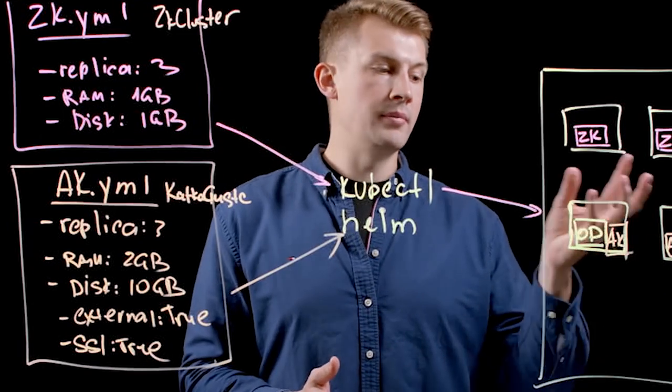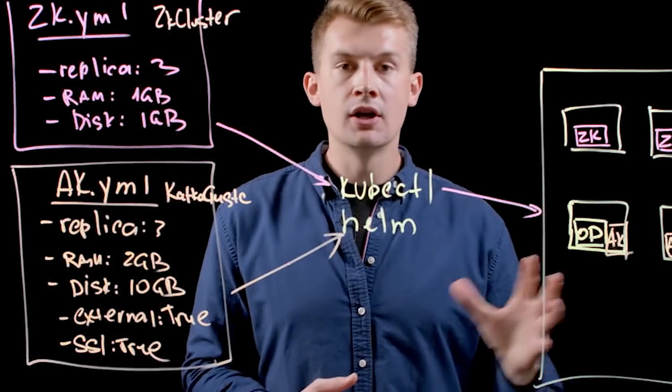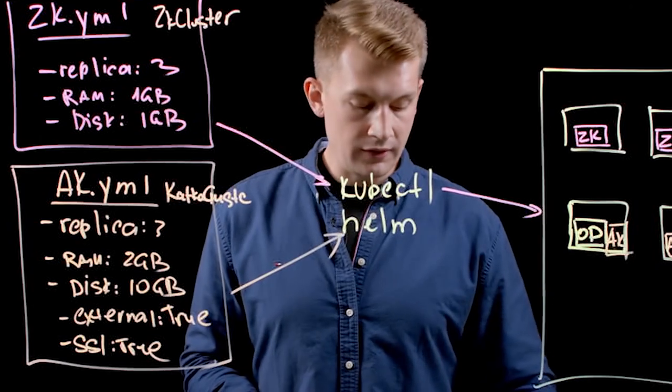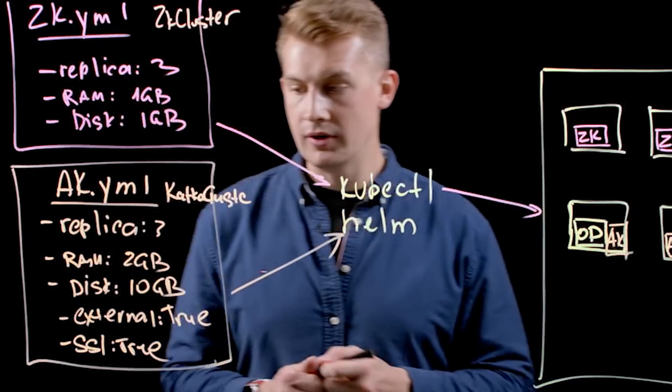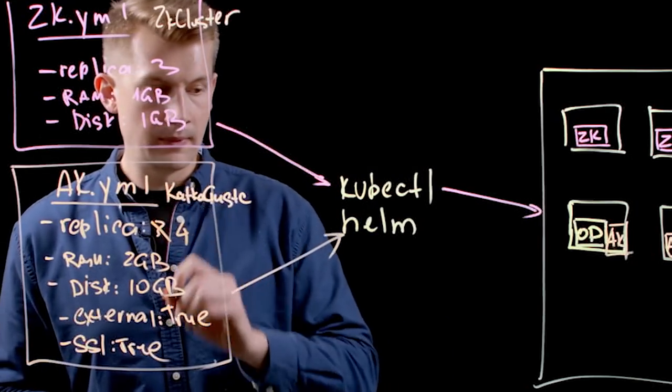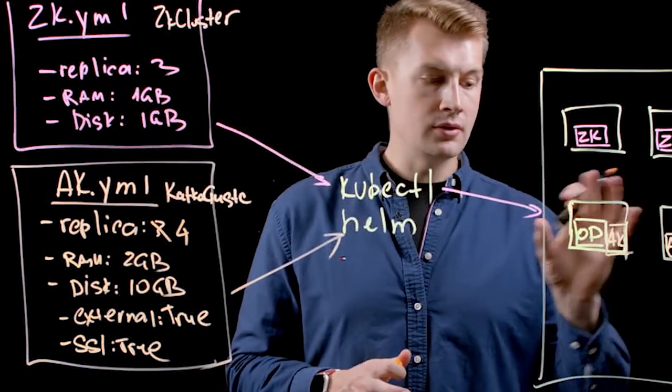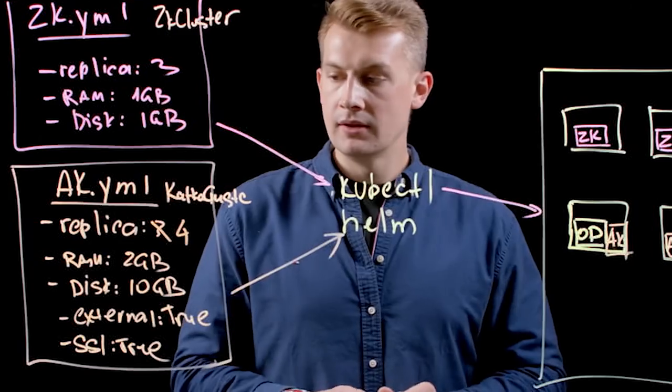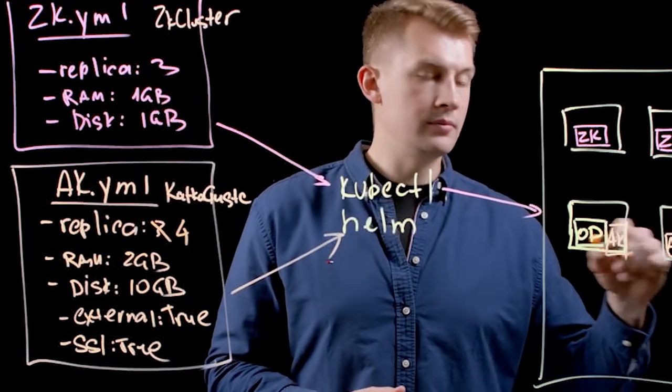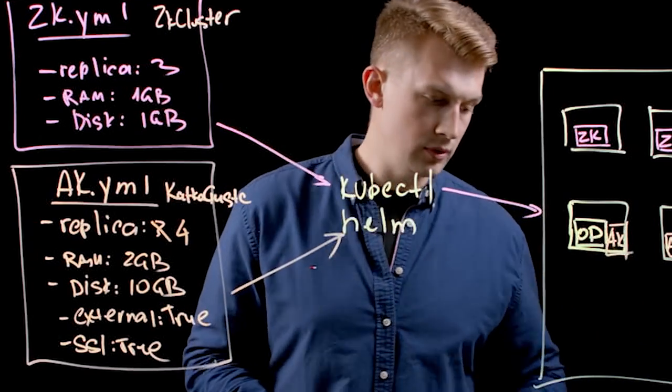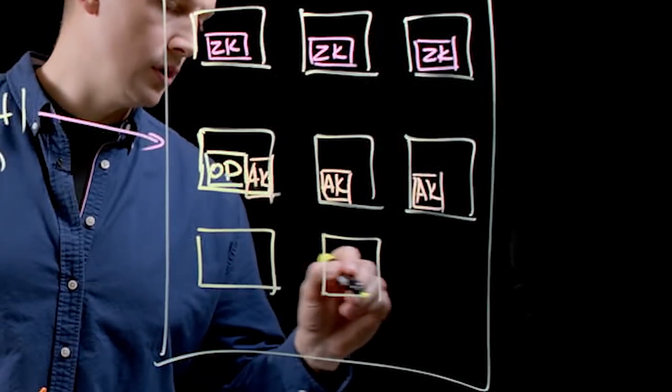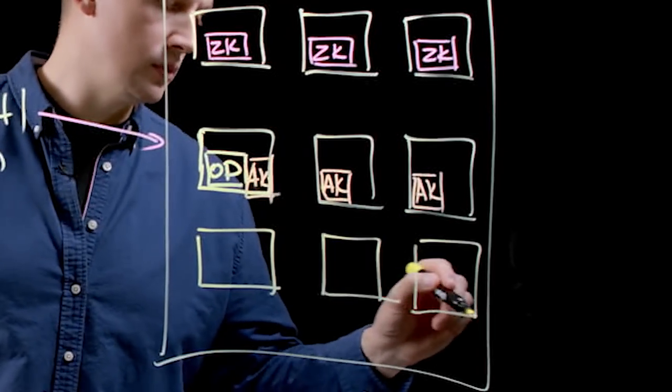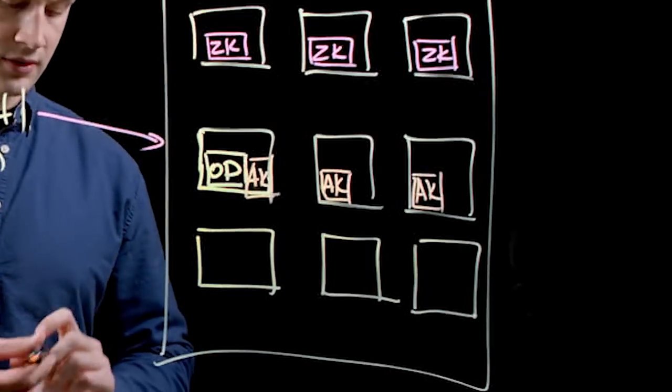The operator also makes it much easier to do upgrades. So if you decide to change the number of replicas from three to four, it will be much easier for operator to do that because operator knows what exactly is going on here. So let's just say we add a few more nodes to our node pool in our Kafka cluster.